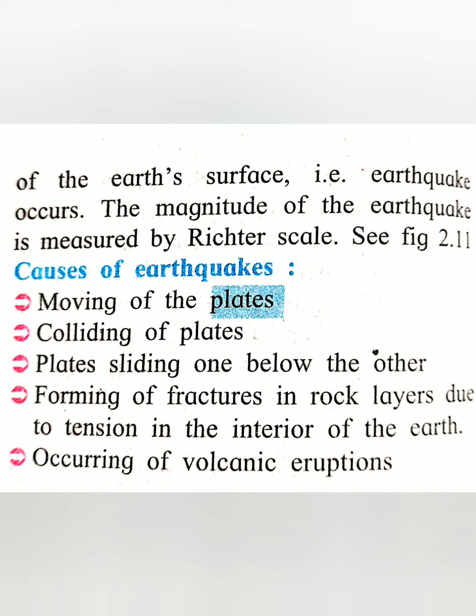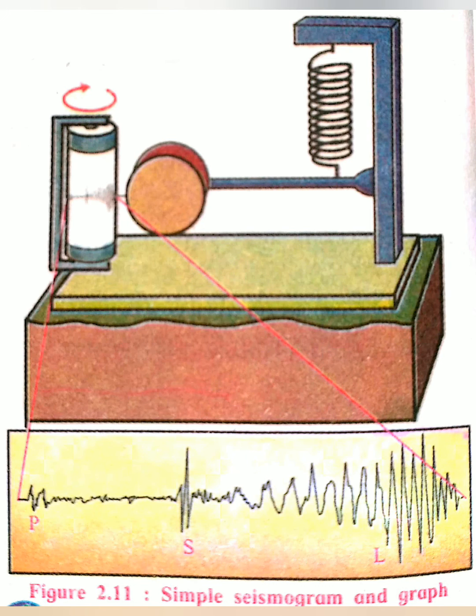The causes of earthquakes include: moving of the plates, colliding of plates, plates sliding one below the other, formation of fractures in rock layers due to tension in the interior of the earth, and volcanic eruption. Our earth is made up of seven plates, and when these plates collide or move, earthquakes take place. The seismograph is a simple machine with a spring, heavy material, and a graph reader that records the earthquake data.